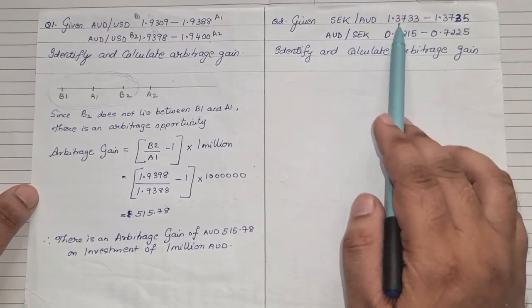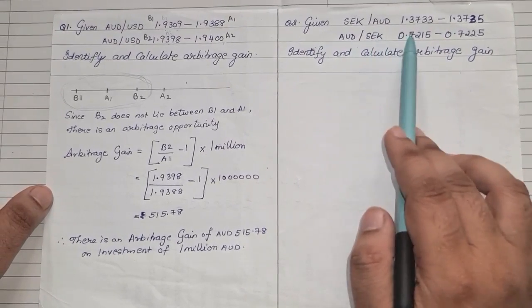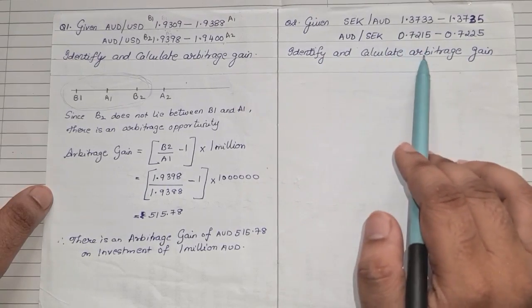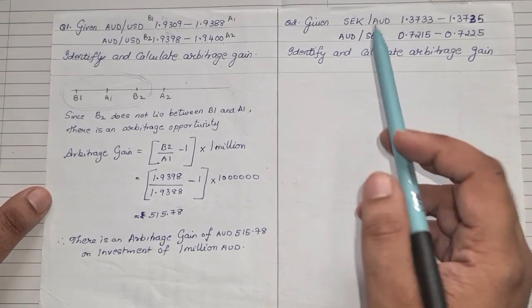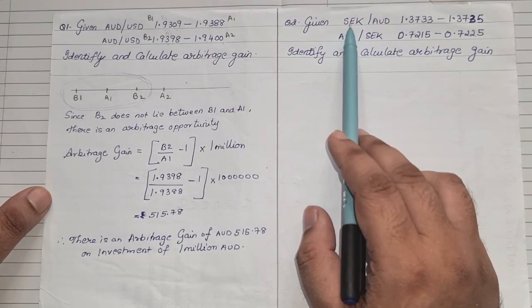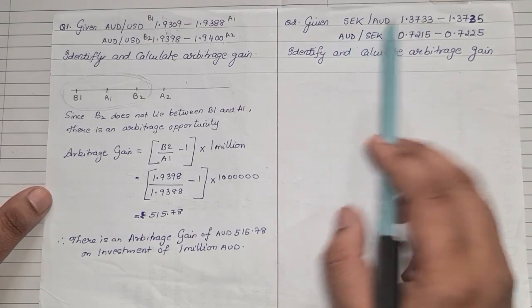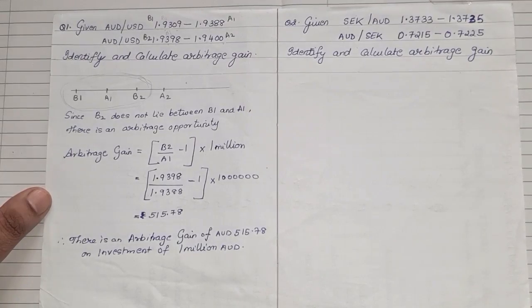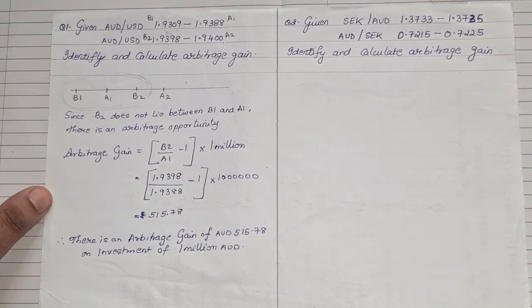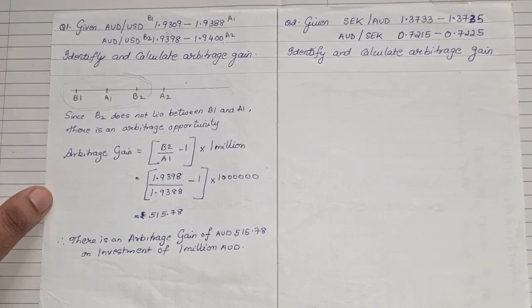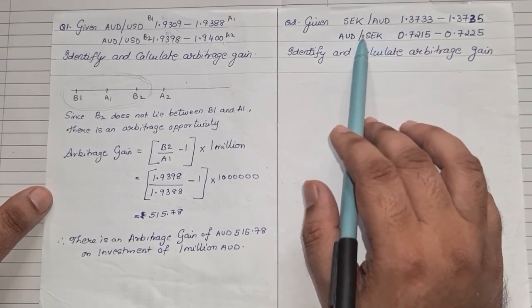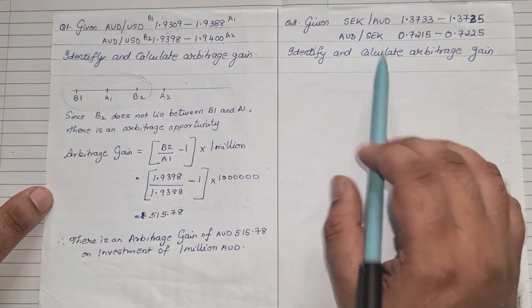The second sum: SEK to AUD — bid and ask rates are given, and AUD to SEK — bid and ask are also given. To find the arbitrage gain, you need the currency in the same order. Here SEK to AUD and AUD to SEK are not in the same order, so we need to convert one quotation. We keep the first equation as it is and convert the second one into SEK to AUD.